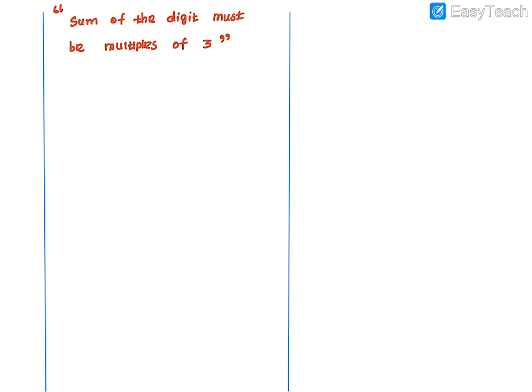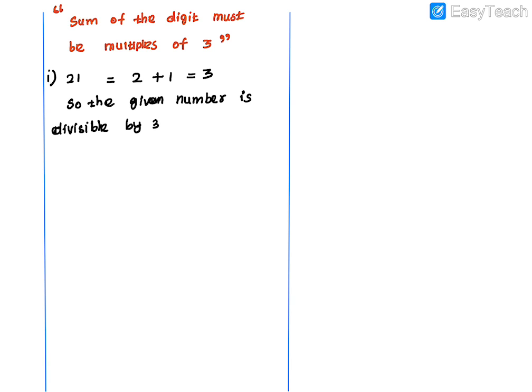Let's check the first example: 21. The digits are 2 and 1, so 2 plus 1 equals 3. Since 3 is a multiple of 3, the given number 21 is completely divisible by 3.